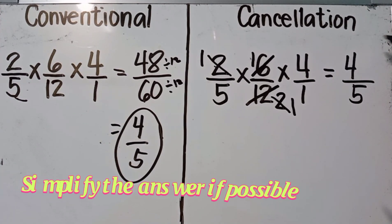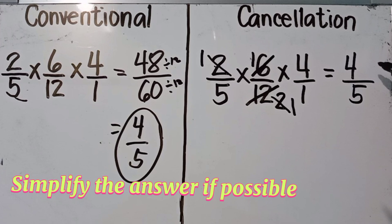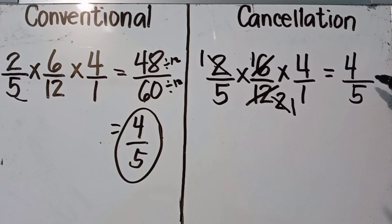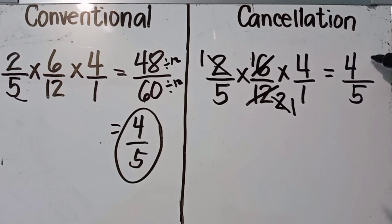Simplify your answer if possible. Four over five is already simplified — it is already in lowest terms.